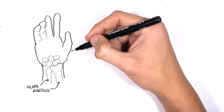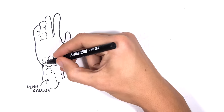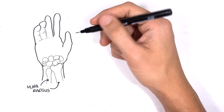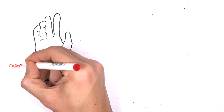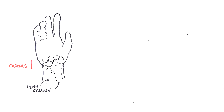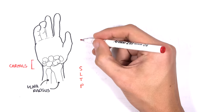The wrist bones consist of many small bones. To put it simply there are eight — four sitting on the top and four below. They are collectively known as the carpal bones. You can remember the eight carpal bones by starting at the thumb and moving around in a clockwise motion and remembering this saying: 'So long to pinky, here comes the thumb.'